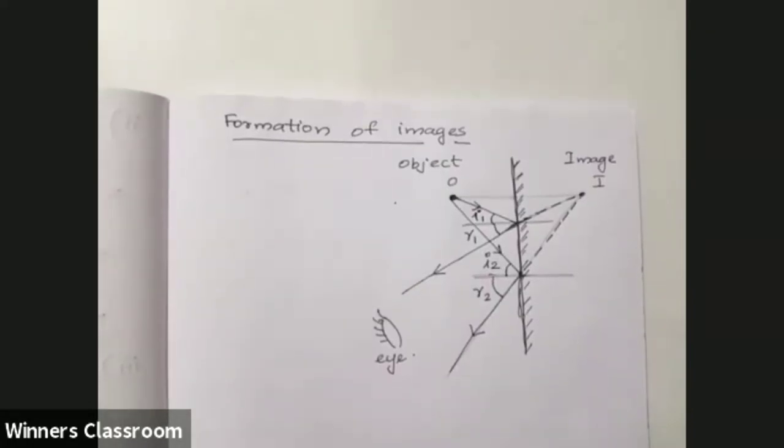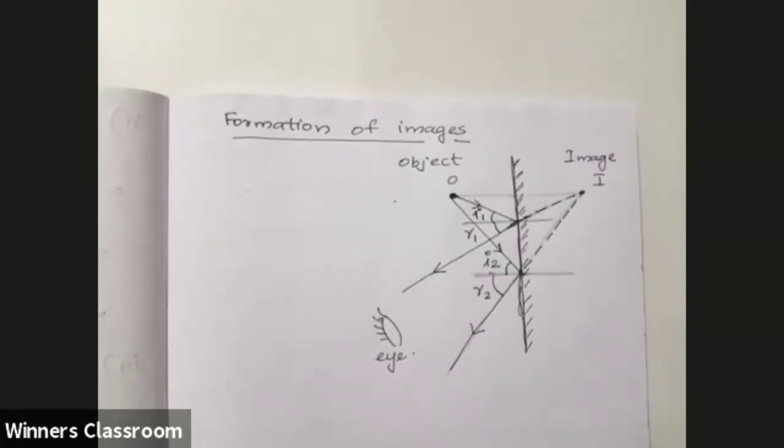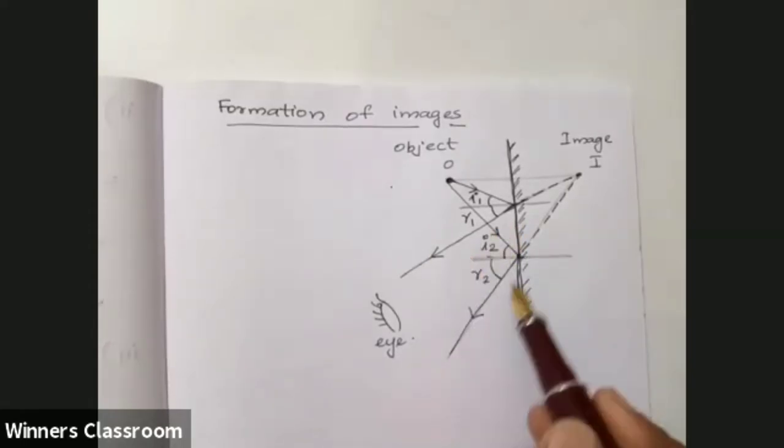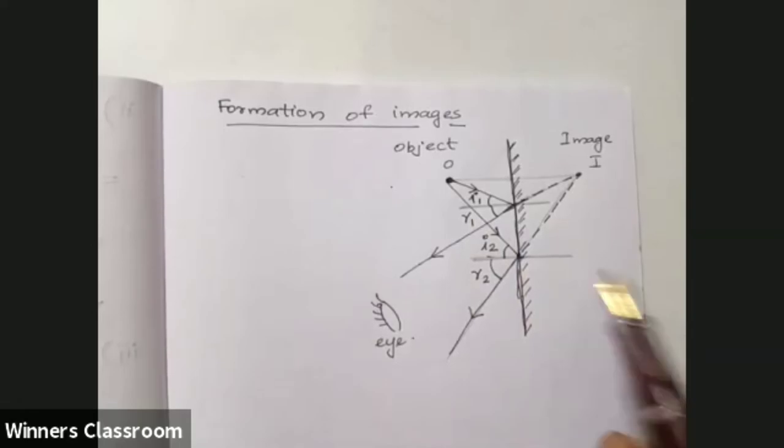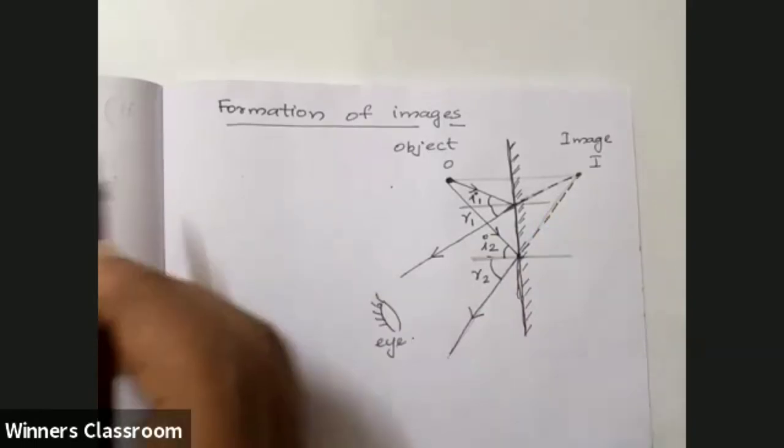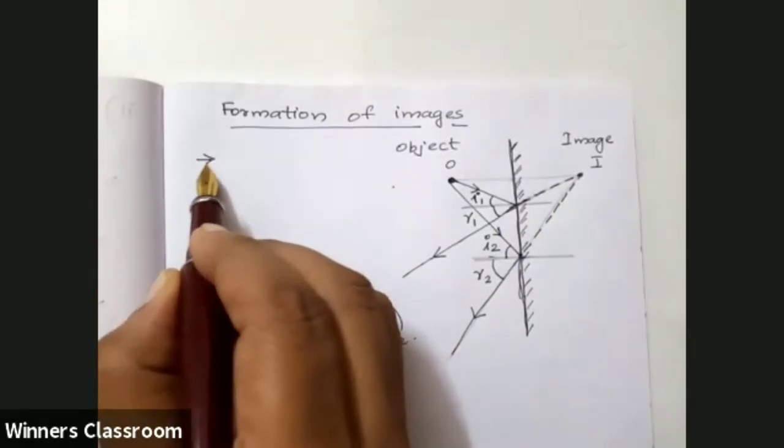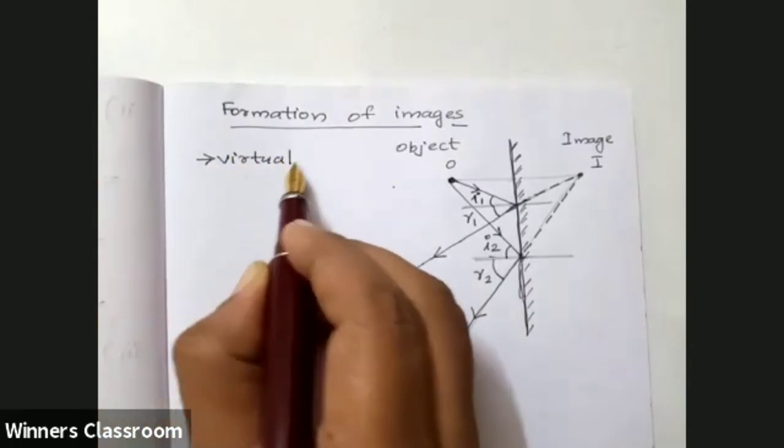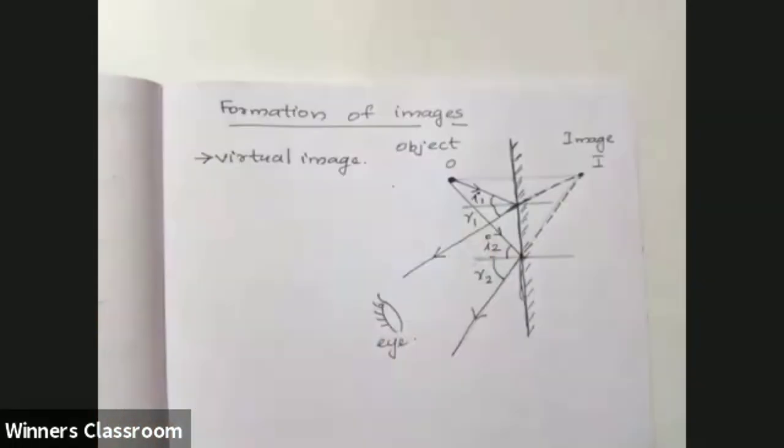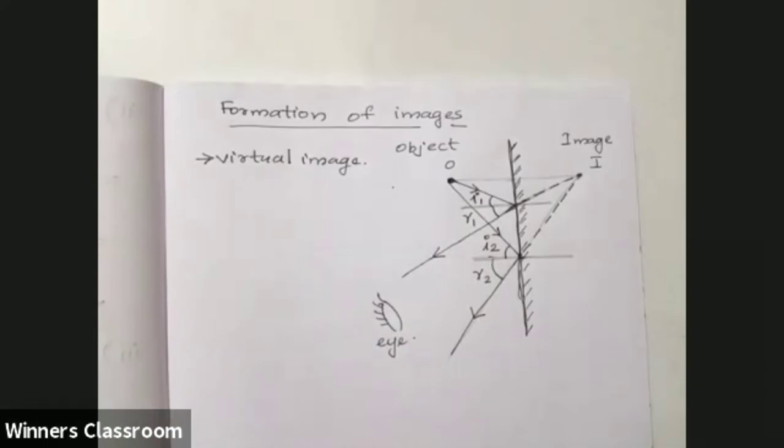Is it a real image or a virtual image? This is a real image or virtual image? Actually, it is not real. This is a virtual image because the image is not formed by the light rays.